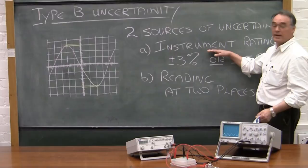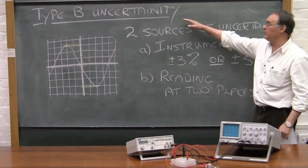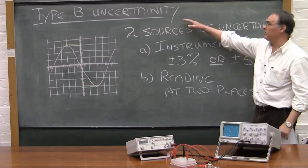So these sources of uncertainty, the instrument rating as well as the readings, all have to be combined to give you the final result of the Type B uncertainty analysis for every measurement that you take.